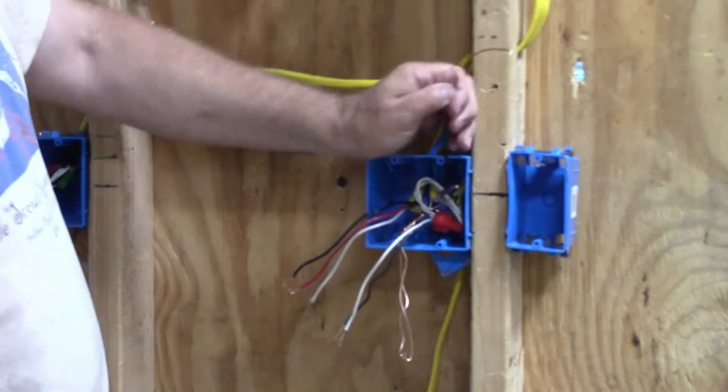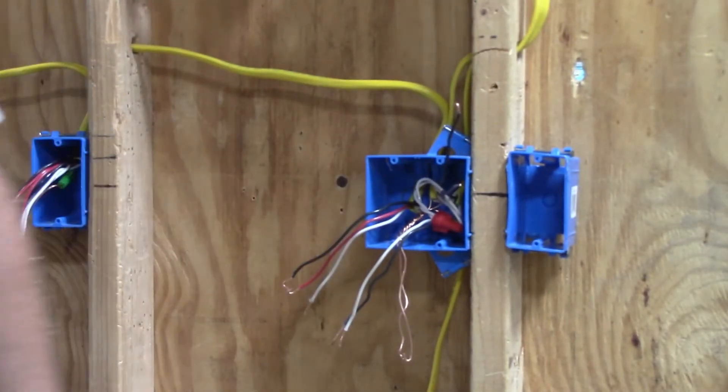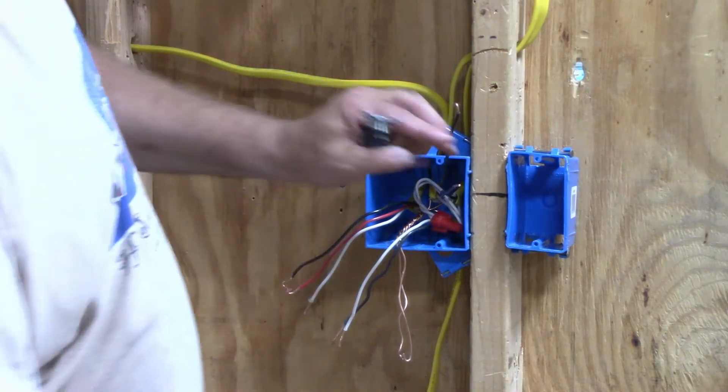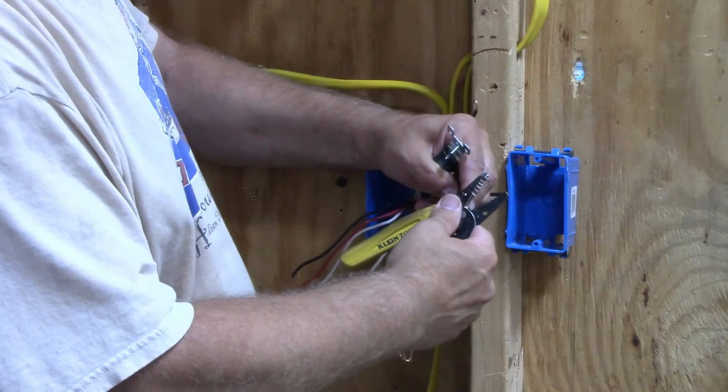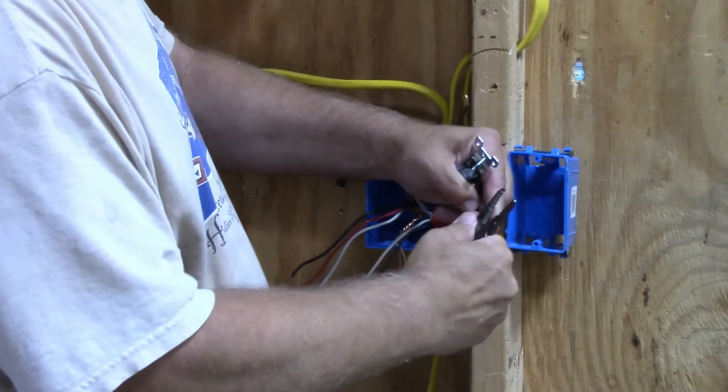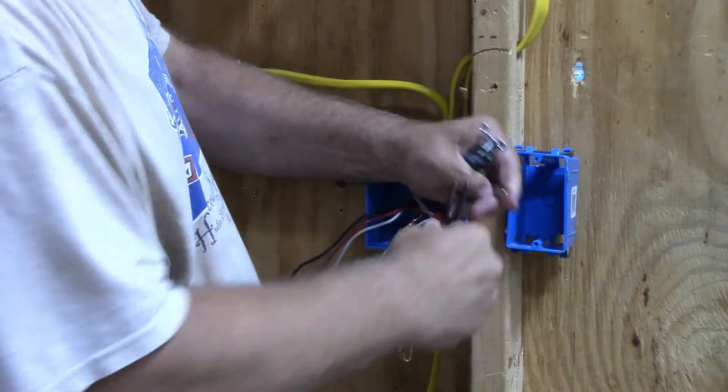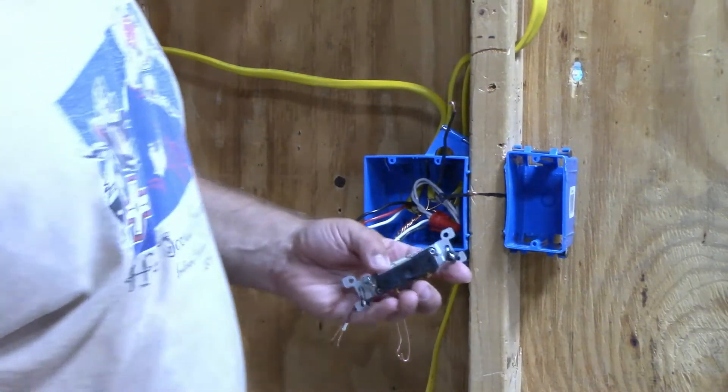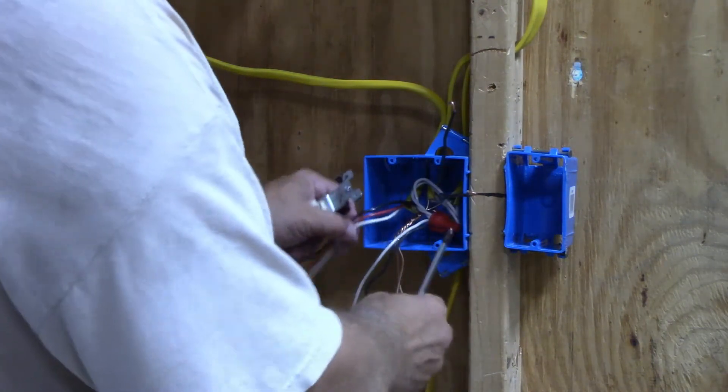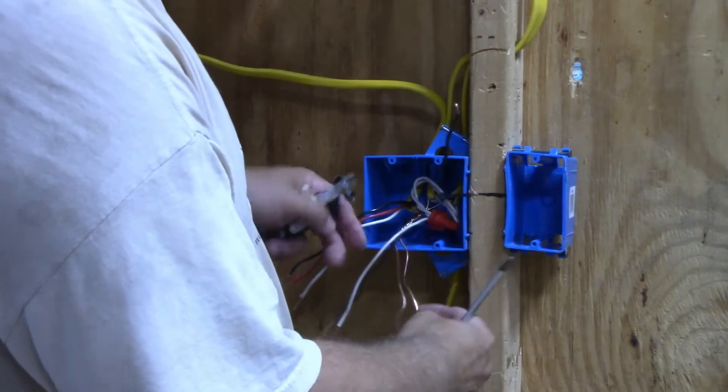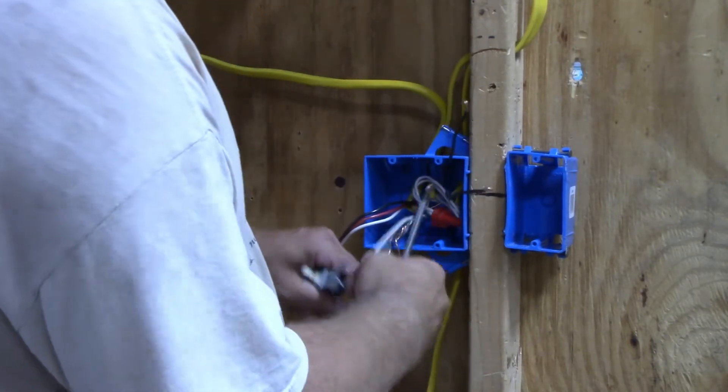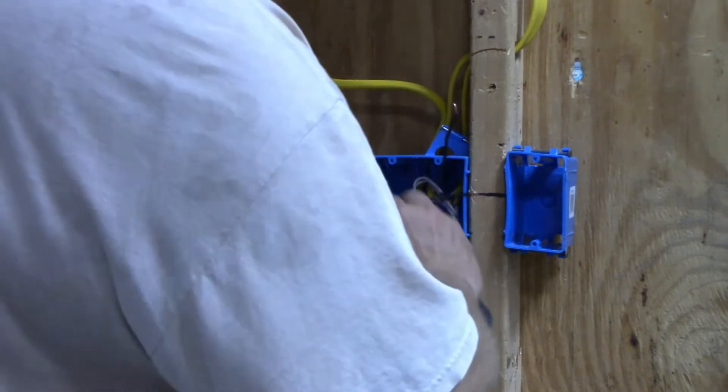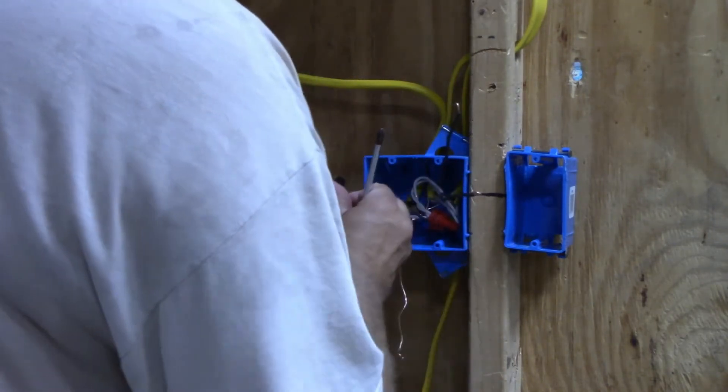That leaves me hot wire and a switch leg. I have to take my single pole switch. I'm going to take one of my ground wires and hook it onto my single pole switch.